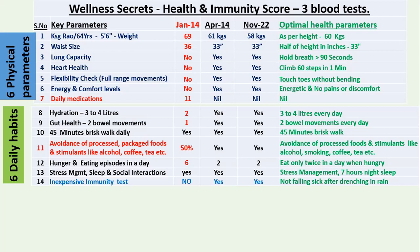That gap will improve your gut health and insulin sensitivity. For stress management, learn yoga and meditation. You must sleep seven hours at night and maintain social interactions. An inexpensive immunity test: if you get drenched in the rain for one hour and do not get a cough or cold that same evening or the next day, that's a sure sign of good immunity.